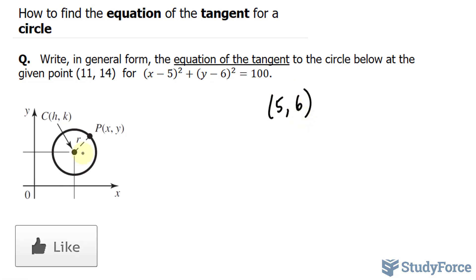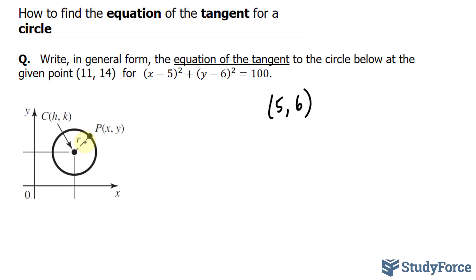The reason why these coordinates are important is because we can use the coordinates for the center and the coordinates of P to find the slope of this line, which we'll call r. Once you find the slope of that line, the negative reciprocal of that slope will be the slope of the tangent line. The tangent line is simply a line that passes through one point of the circle — the tangent line will look like this.